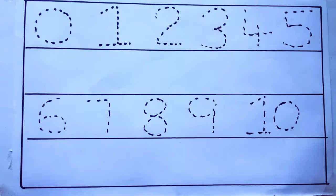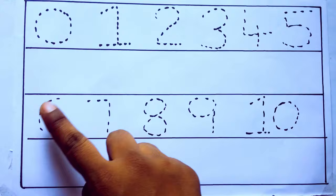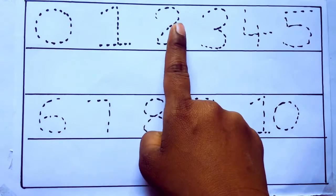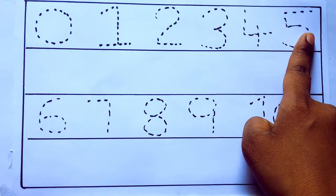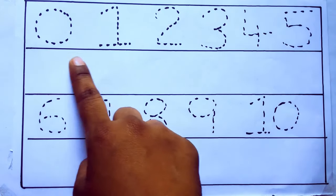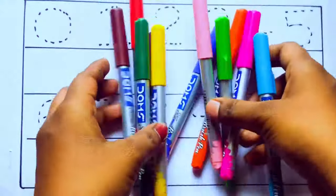Hello kids, how are you? Welcome to our channel. Today we are going to learn numbers 0 to 10: 0, 1, 2, 3, 4, 5, 6, 7, 8, 9, 10, and rewriting the numbers. Let's learn some colors.